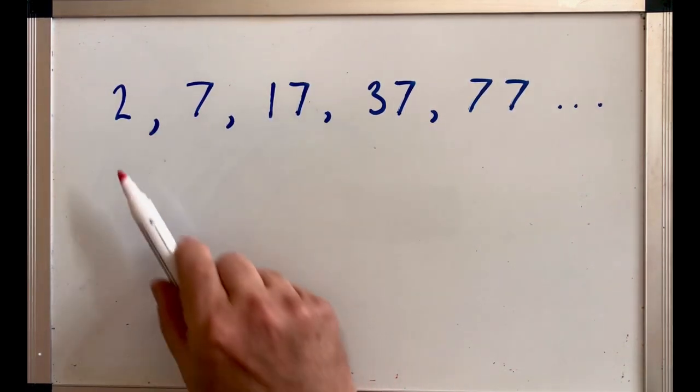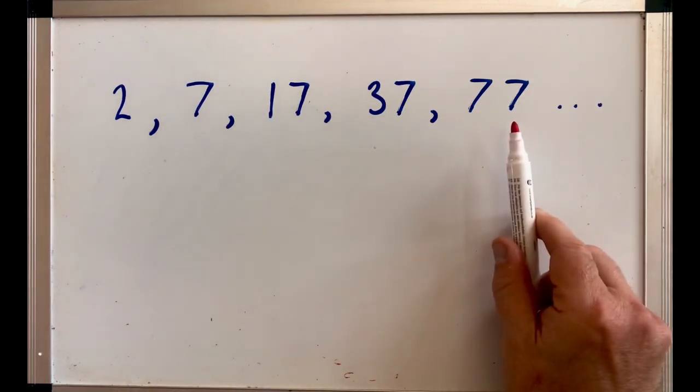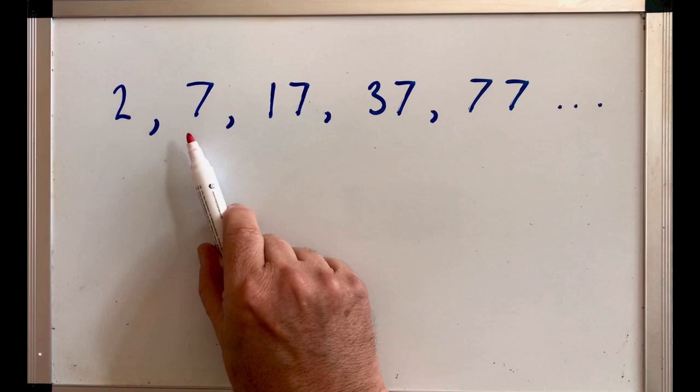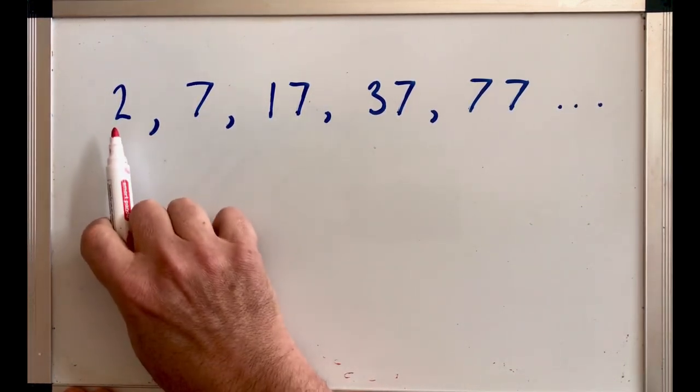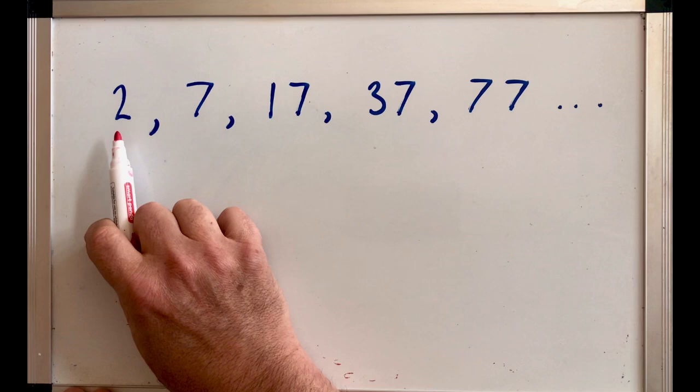Remember, a sequence is just a list of numbers with some sort of connection, and a term just means a member of that list. For example, if we looked at this, this would be the first term.